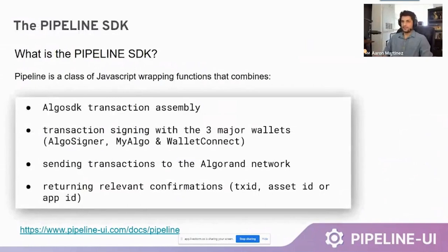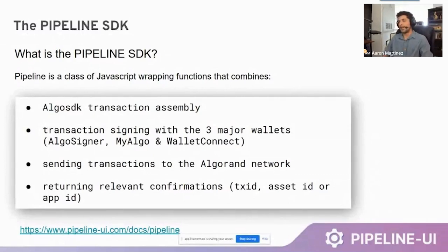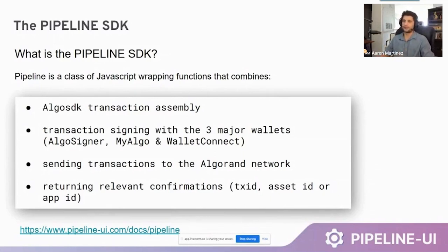So what is the Pipeline SDK? Pipeline is a class of JavaScript wrapping functions that combines Algo SDK transaction assembly, transaction signing with all three major wallets — AlgoSigner, MyAlgo, and WalletConnect — and we can actually add more wallets as they become available. There's a chance that within the next year we could have two to three additional major wallets, and we can integrate all of those directly into our SDK. It's also for sending transactions to the Algorand network and returning relevant confirmations: transaction ID, asset ID, or app ID. This is something we use in absolutely everything we build on Algorand.